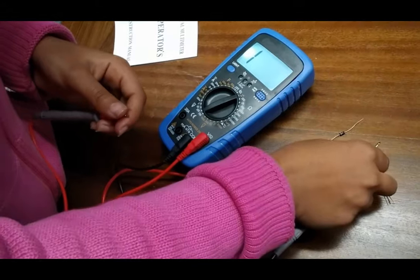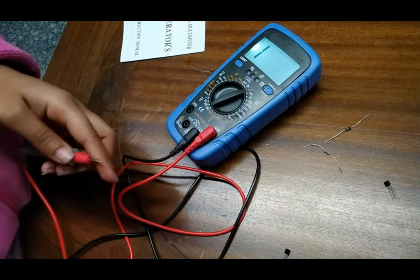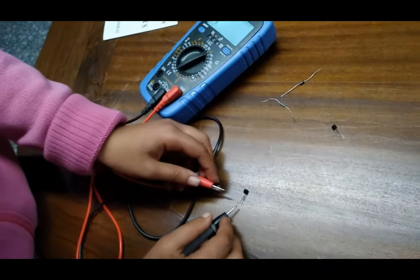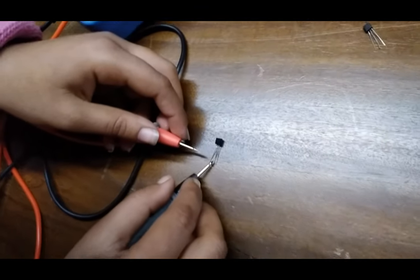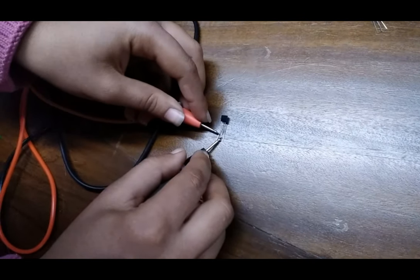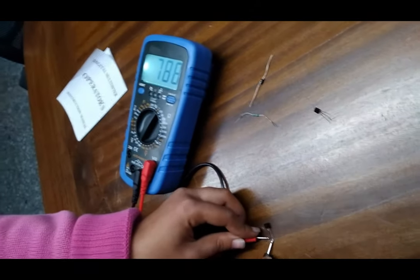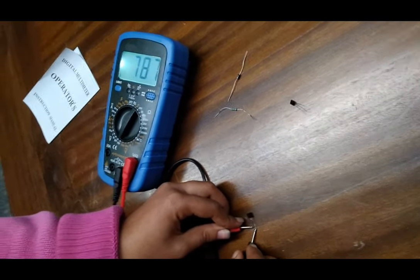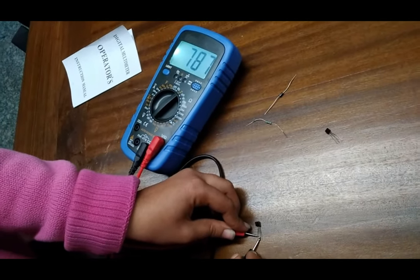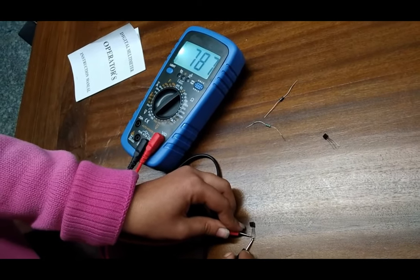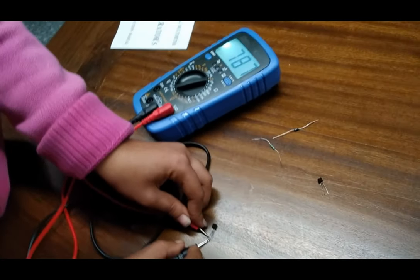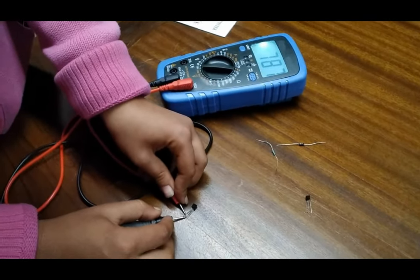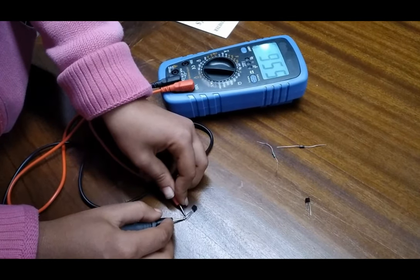Now we are testing our transistor to determine which type it is and what resistance value it is giving. As we can see in the display, 787 ohm resistance is coming with the base negative and emitter positive side.